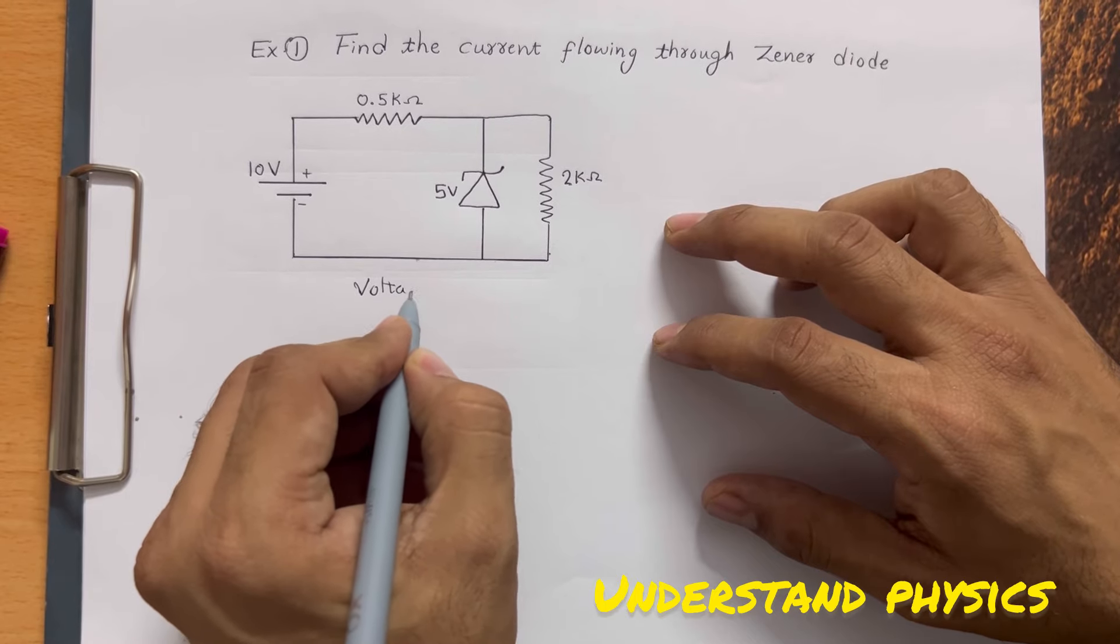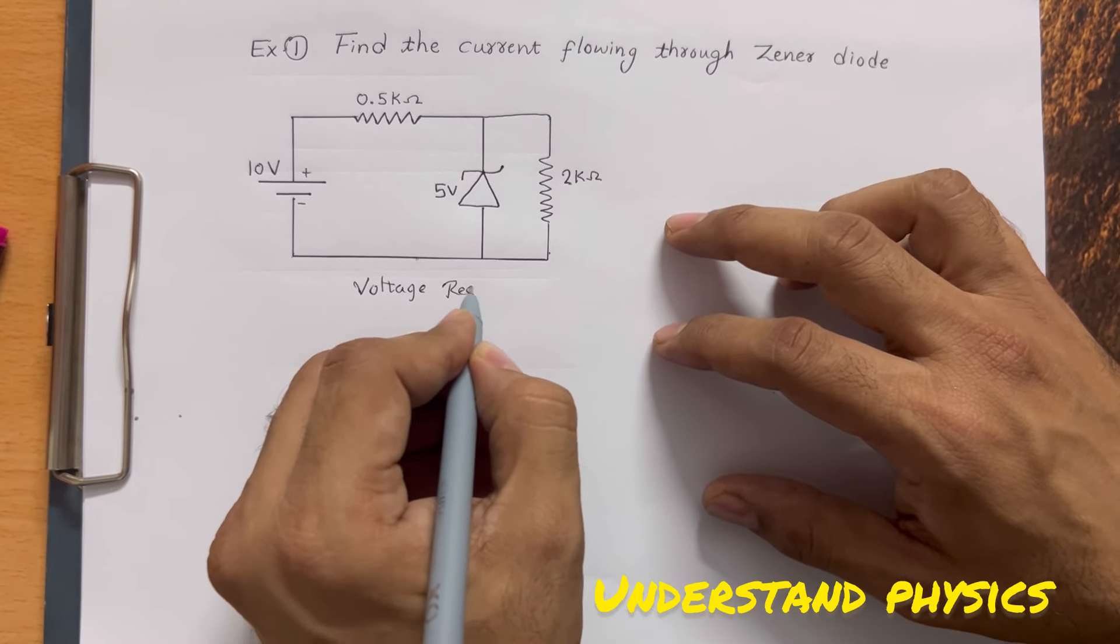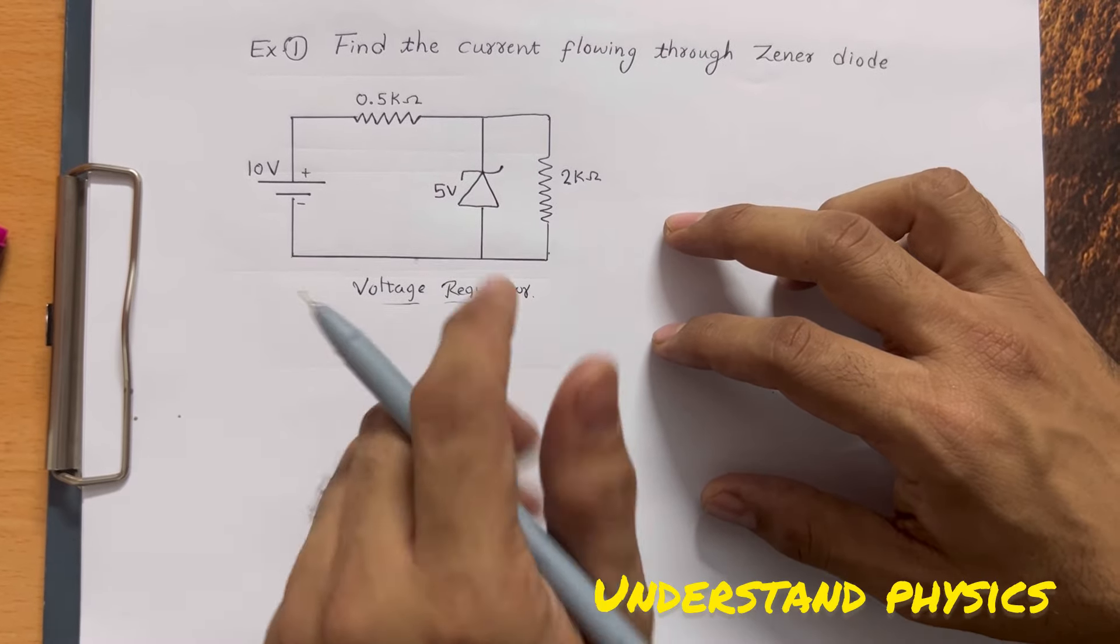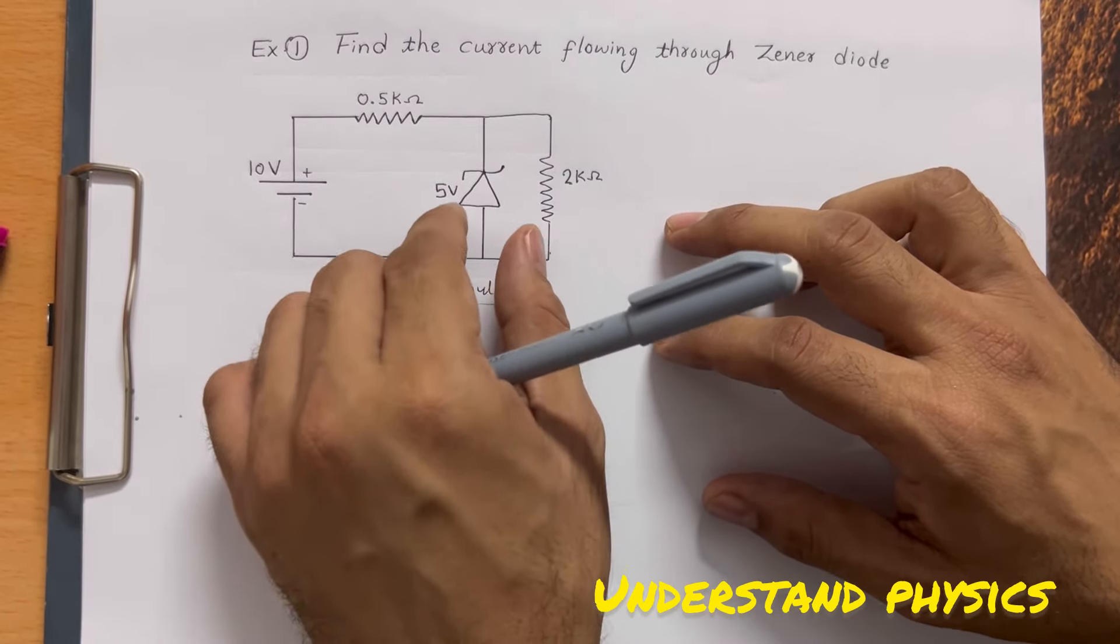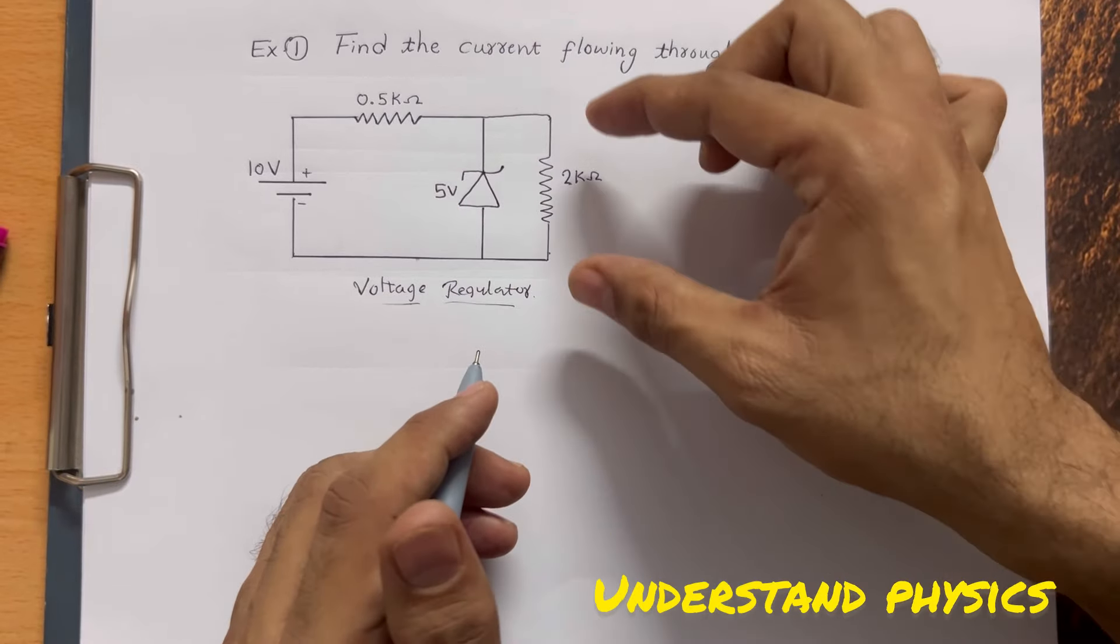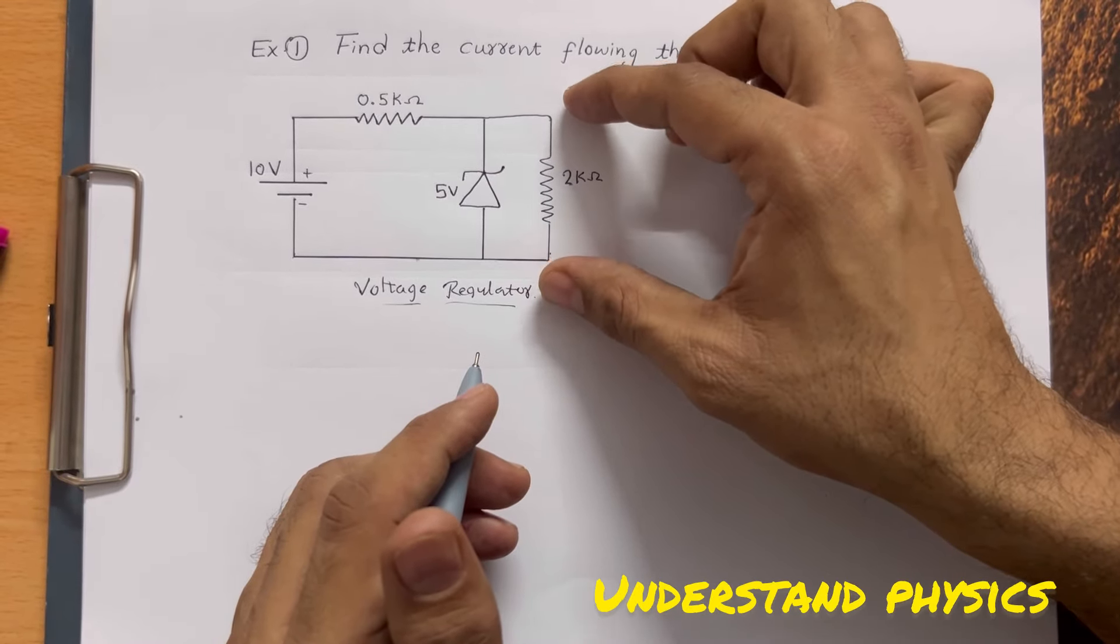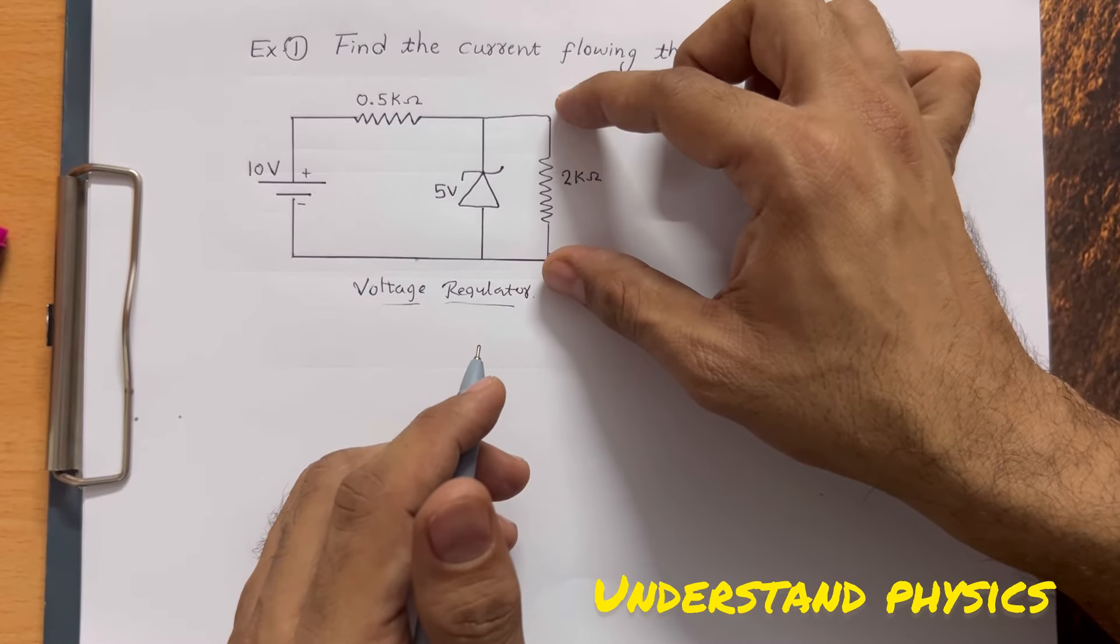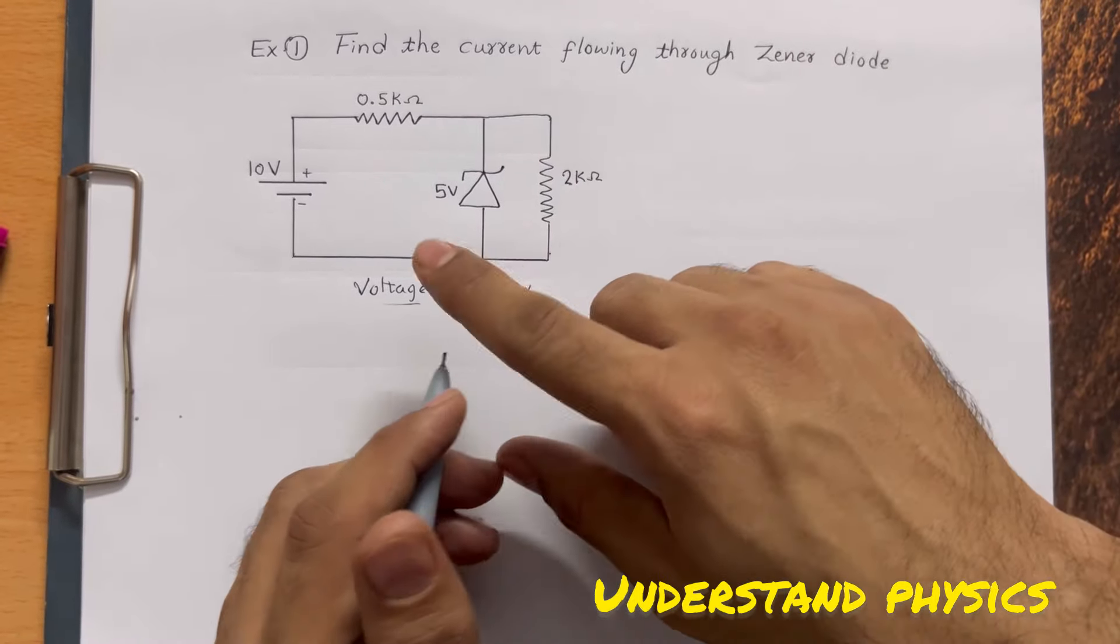In this circuit, the Zener diode works like a voltage regulator. Because of the Zener diode, the voltage across this resistance is continuously maintained at 5 volts. This circuit is called a voltage regulator circuit.